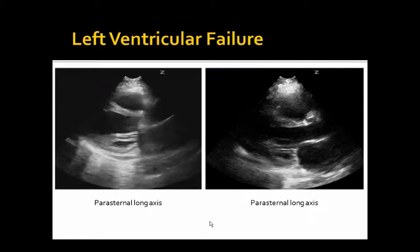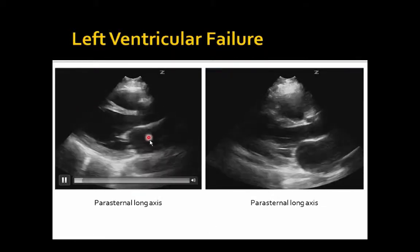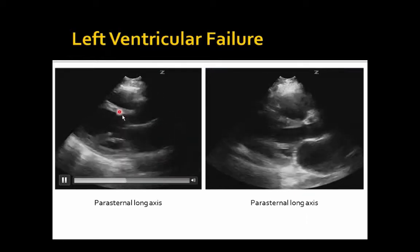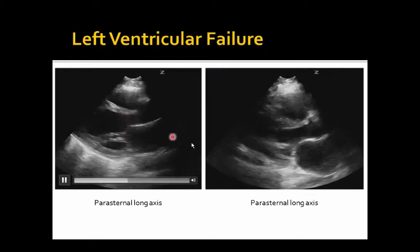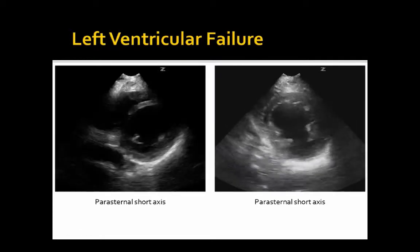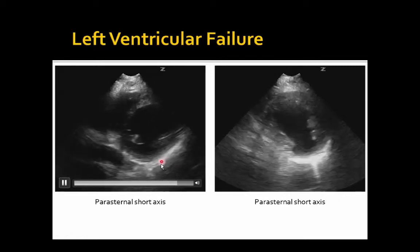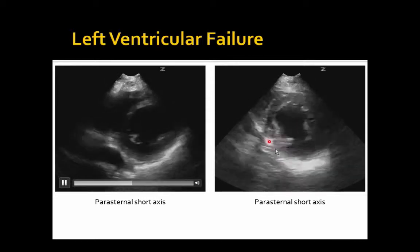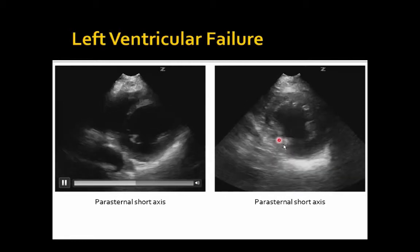Now here are some signs of failure. Look at these ventricles — not much volume change going on. The mitral valve doesn't open much because there's not enough fluid transfer to push it open. The volume doesn't change a whole lot, and the mitral valve barely squeaks open at all. The walls don't thicken as much as in the normal example. In short axis views, we see walls not thickening very much and volume not changing very much.